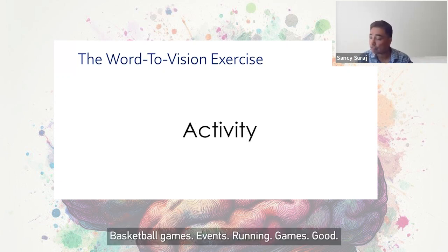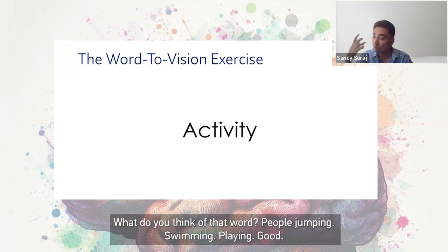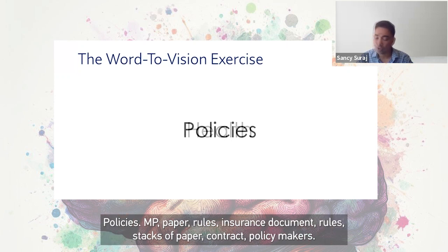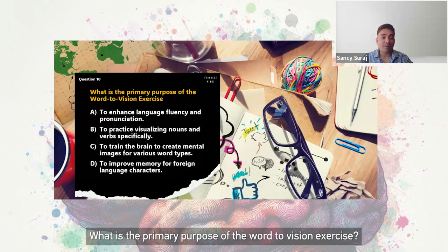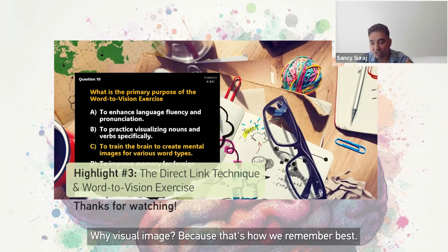For each of you it's going to be individualized and personalized. Activity? Basketball, games, running, people jumping or swimming. Health? A hospital, blood tests, a heart shape, a nurse. Policies? Documents, rules, a contract, or policy makers. The primary purpose of the word-to-vision exercise is to convert words into visual images — because that's how we remember.